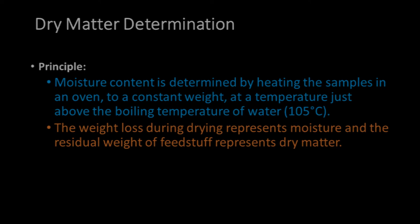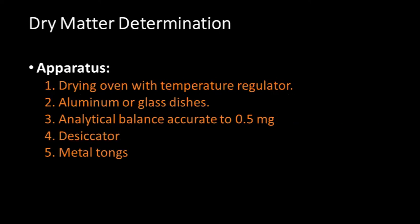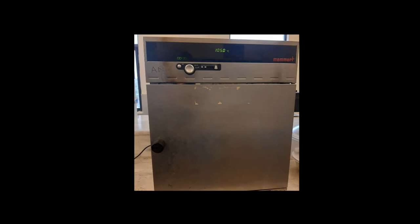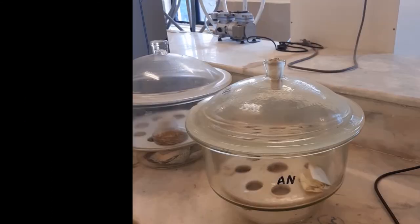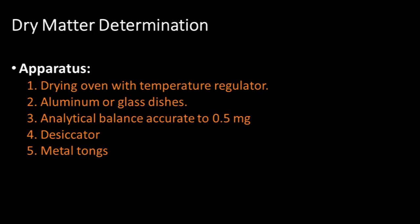For the determination of dry matter, a drying or hot air oven is required. We need aluminum or glass dish, analytical balance with an accuracy of 0.5 milligram, desiccator, and metal tongs. No reagent is required for the determination of dry matter.